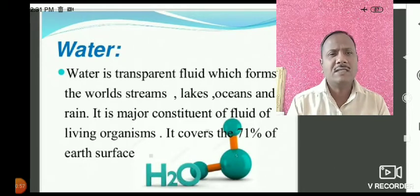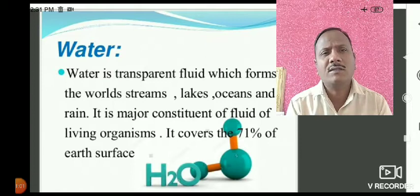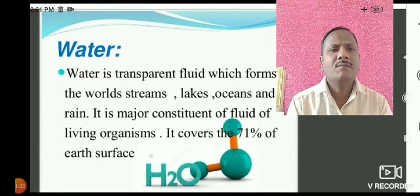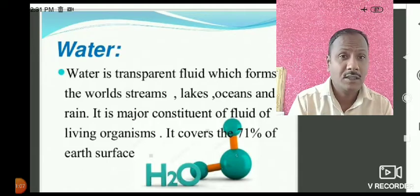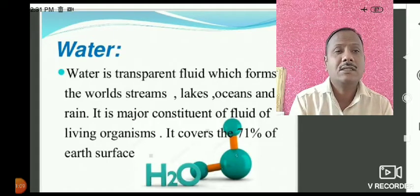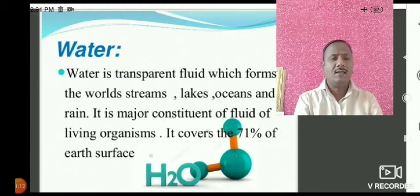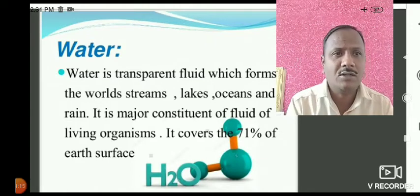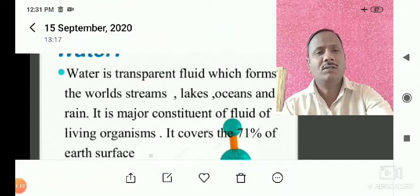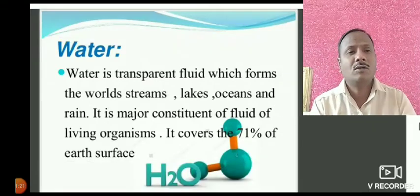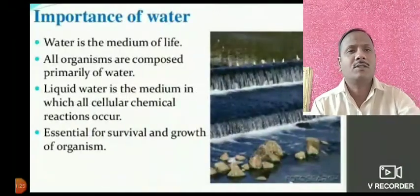Water is a transparent fluid which forms the world's streams, oceans, and rain. It is the major content of fluid of living organisms. It covers nearly 71% of the earth, meaning 71% of the earth is occupied by water. So water is much more abundant than soil on the earth, and it is very important.